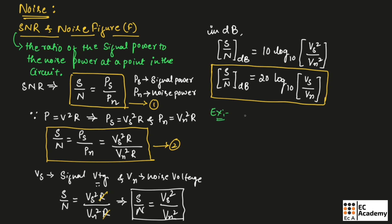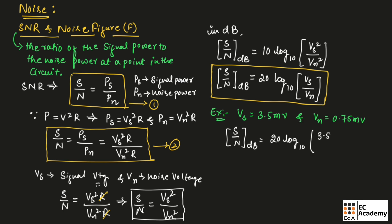For example, in a circuit if signal voltage is 3.5 millivolts and noise voltage is 0.75 millivolts, then SNR (dB) = 20 log₁₀(3.5 / 0.75) = 20 log₁₀(4.66). The signal to noise ratio is equal to 13.38 dB.